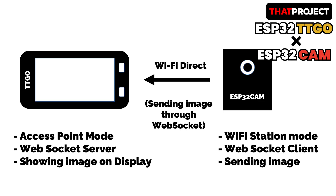Let's briefly talk about the way it works. The ESP32 cam operates in Wi-Fi station mode, trying to connect to the pre-selected target access point with a predefined SSID and password. When the Wi-Fi connection is established, it acts as a WebSocket client and continues to send images. This is what ESP32 cam does. It's very simple.